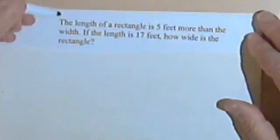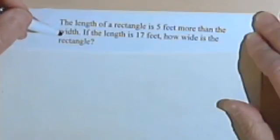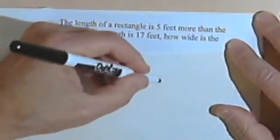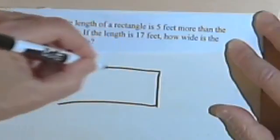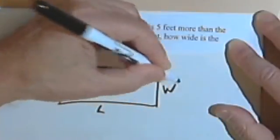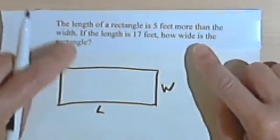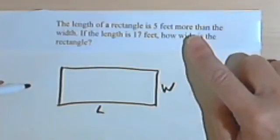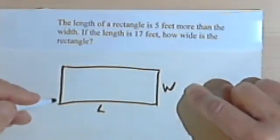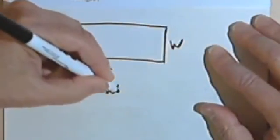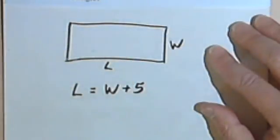Here's another one. The length of a rectangle is 5 feet more than the width. If the length is 17 feet, how wide is the rectangle? Sometimes it's nice to draw a picture. It might not be necessary with this, but it can't hurt. So we've got a rectangle. And they're telling us we've got a length and a width. And we're comparing the two of them. It says the length is 5 feet more than the width. So if I add 5 feet to the width, I should get the length. So in other words, the length is the same as the width plus 5 feet.